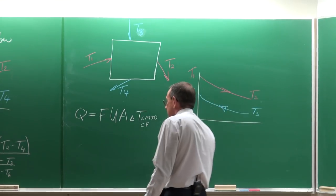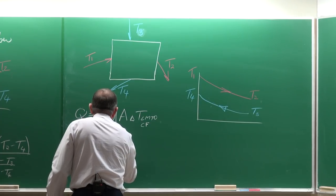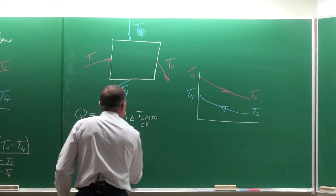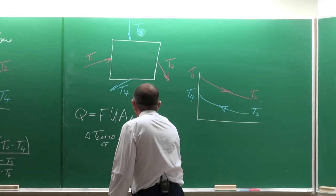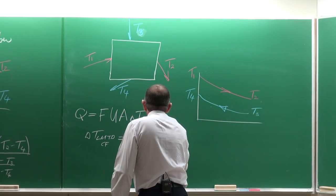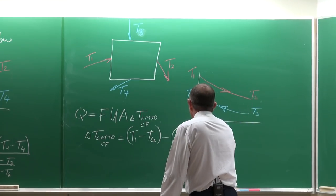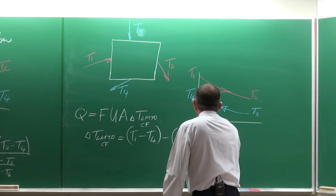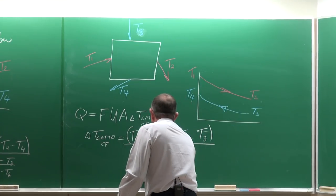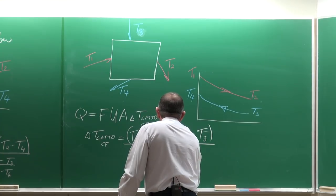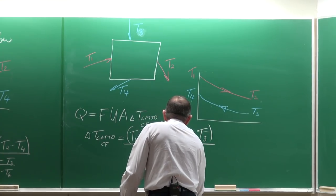Once you've done that, the LMTD for the counter flow heat exchanger would be: T1 minus T4, minus T2 minus T3, divided by the natural log of those two terms — (T1 minus T4) over (T2 minus T3).